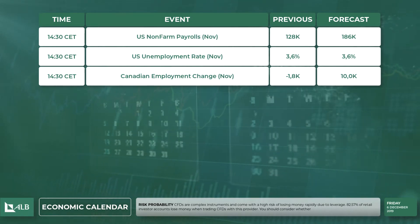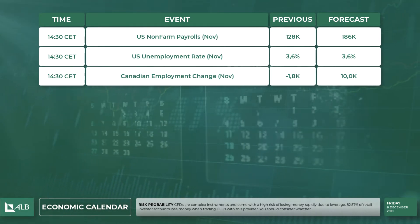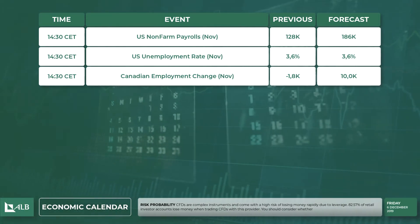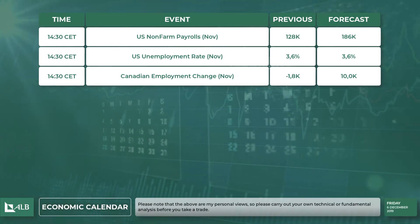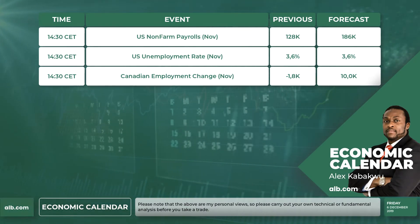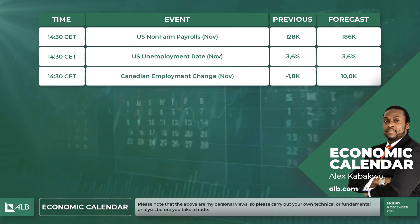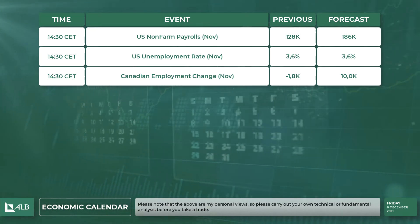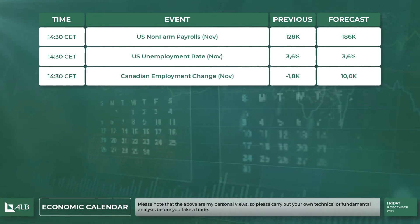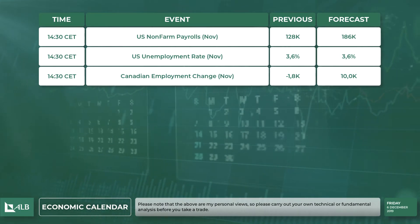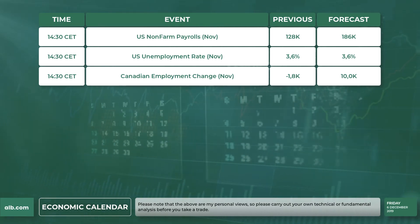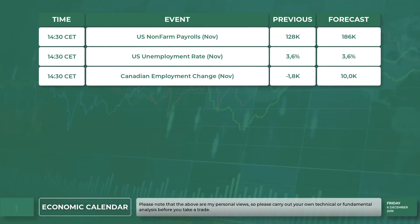The next data looks at the US unemployment rate for the period of November. This increased to 3.6% in October 2019 from 3.5% in the previous month, in line with market expectations. Over the month, the number of unemployed persons increased by 86,000. The labor force participation rate edged up to 63.3% from 63.2% in September. The previous figure is 3.6% and the forecast remains unchanged at 3.6%.